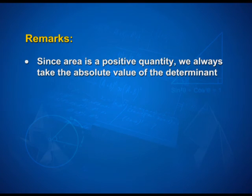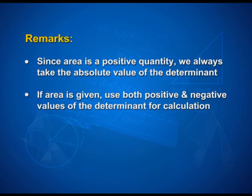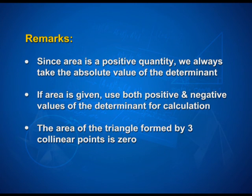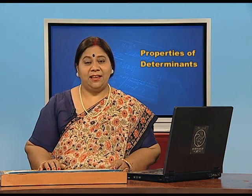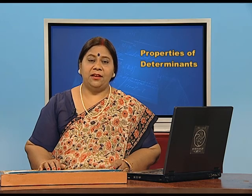Here students, there are some important remarks. First, since area is a positive quantity, we always take the absolute value of the determinant. Second, if area is given, use both positive and negative values of the determinant for calculations. Third, the area of the triangle formed by three collinear points is always 0. Today we studied the properties of determinants, their verification, and the area of a triangle using expansion of determinants. In the next session, we shall study about cofactors and minors of determinants, and the inverse and adjoint of a matrix.